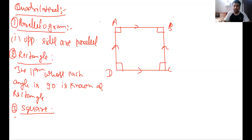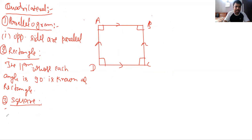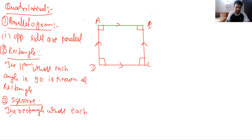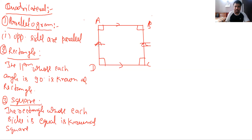A square is a rectangle whose each side is equal. The rectangle whose each side is equal is known as a square. If these 4 sides are equal, then this is a square.